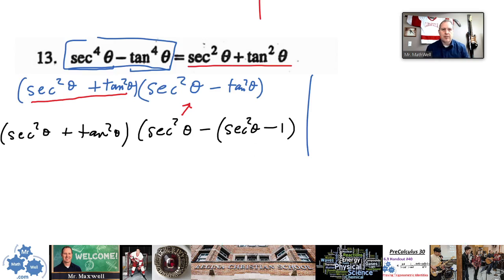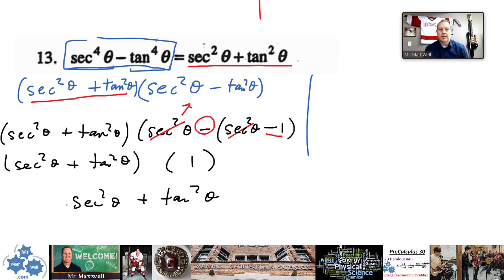So this is now, what do I have here now? Secant squared minus secant squared. That's gone. And I have a negative or a minus negative one. So this right here is secant squared theta plus tan squared theta times one. Secant squared theta plus tan squared theta. That's exactly what I wanted on the other side. Quad erit demonstrandum. I am done.